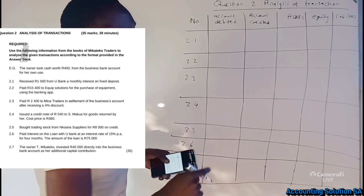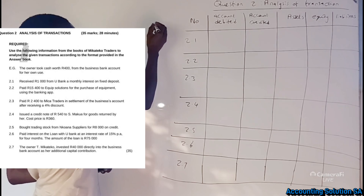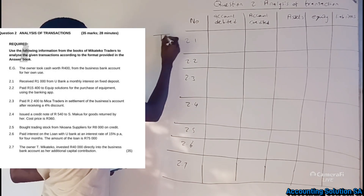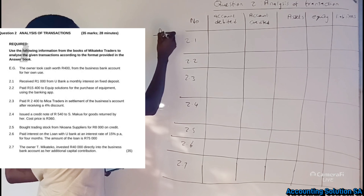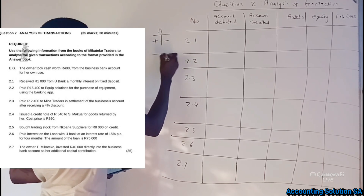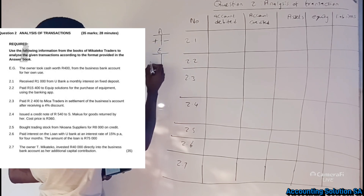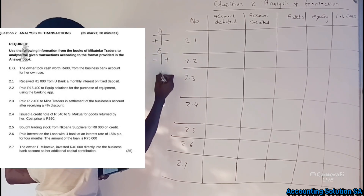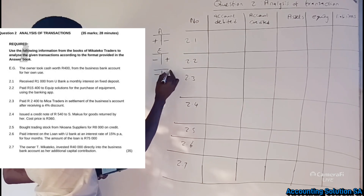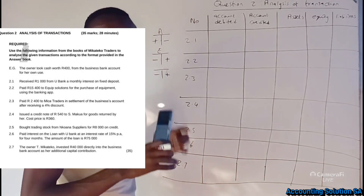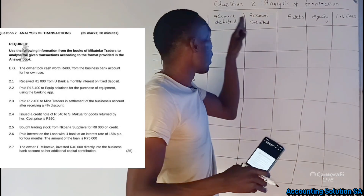Here is the key principle: assets always increase on the debit side and decrease on the credit side. Equity increases on the credit side and decreases on the debit side. Liability is the same as equity. This principle is very important because it guides you on what to debit and what to credit.